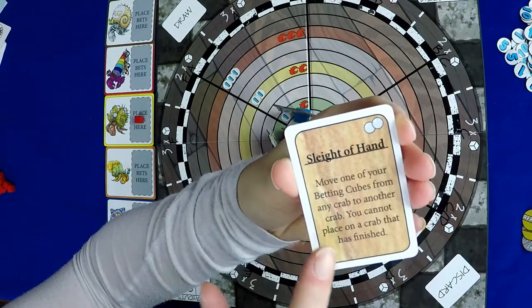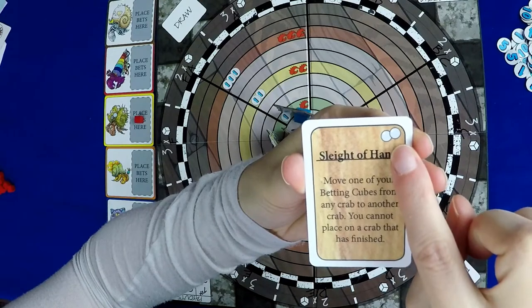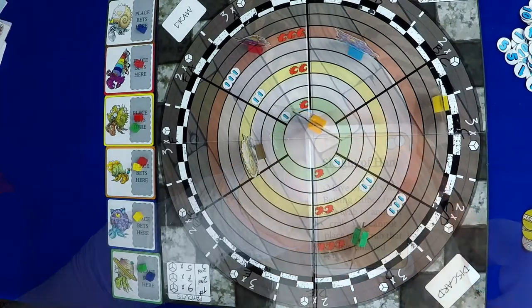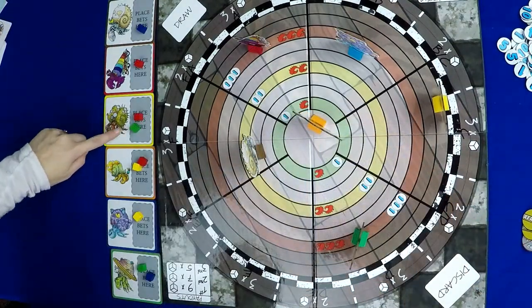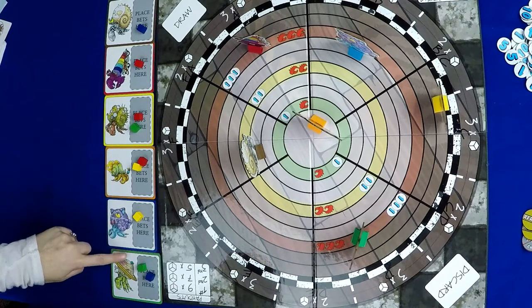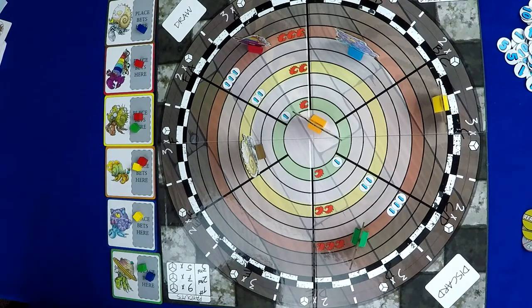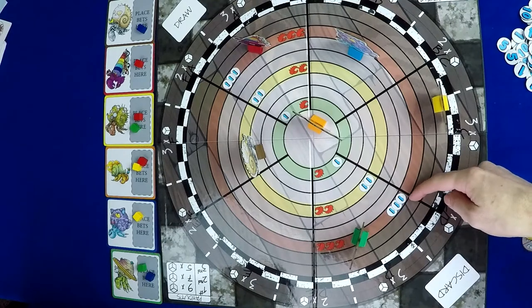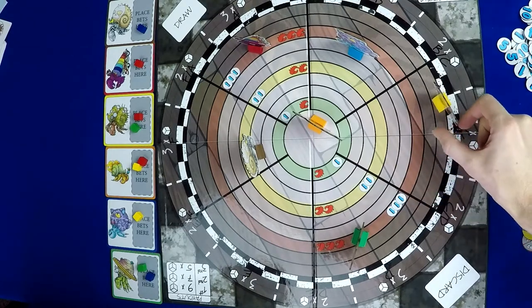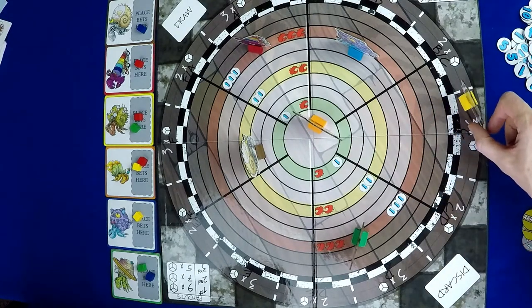As actions, you can also discard cards from your hand to gain pearls. Placing a betting cube on a crab's betting board or on a lane takes an action and costs pearls. The closer a crab is to finishing the race, the more pearls it costs to bet on it. Once a crab crosses the finish line, you can't bet on it anymore.